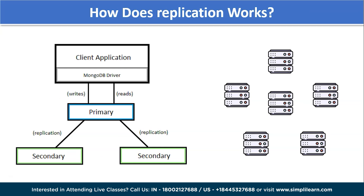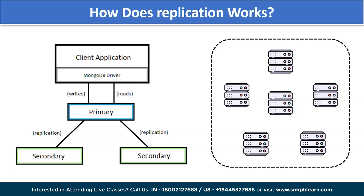Let's understand how replication works in MongoDB. In this diagram, a client application always communicates with the primary node, and the primary node replicates the data to multiple secondary nodes. The client application performs read and write operations from the MongoDB server, and we have a primary server which handles both read and write operations. From there, it creates a replication of the same database into a secondary server.